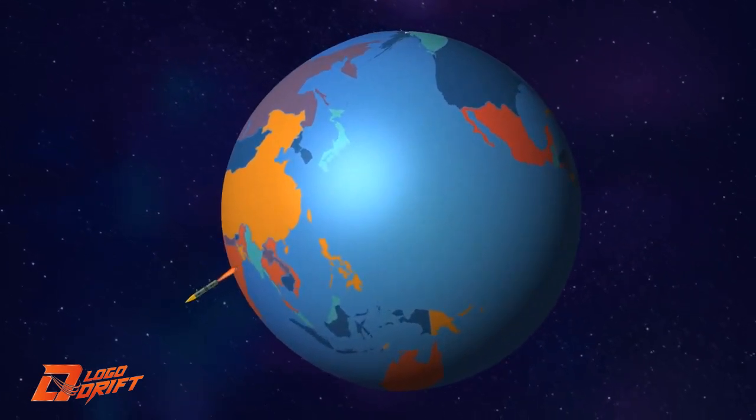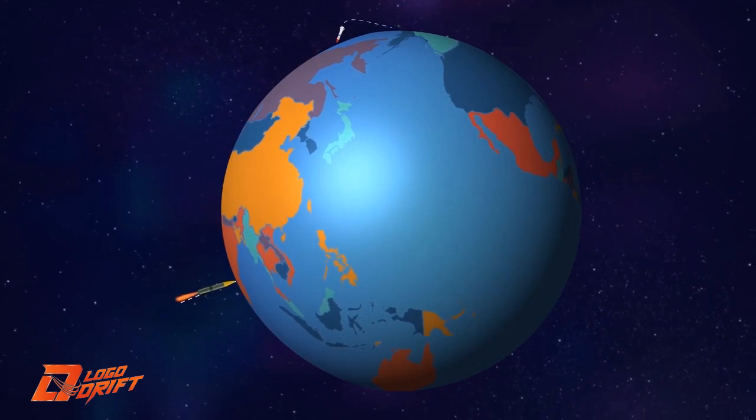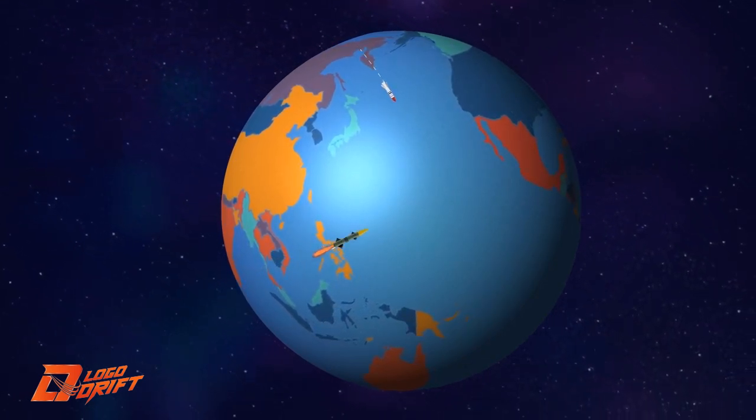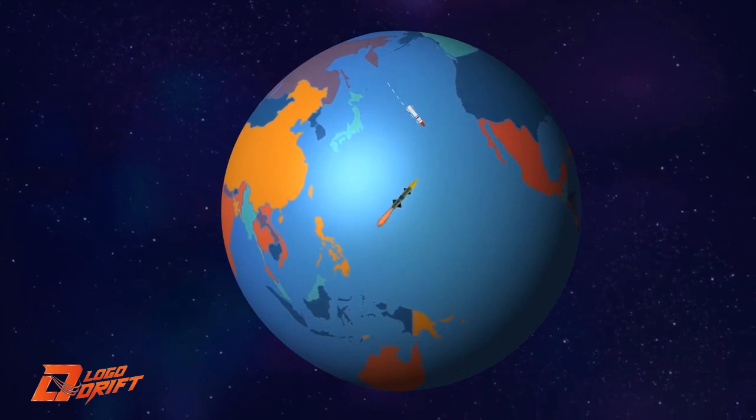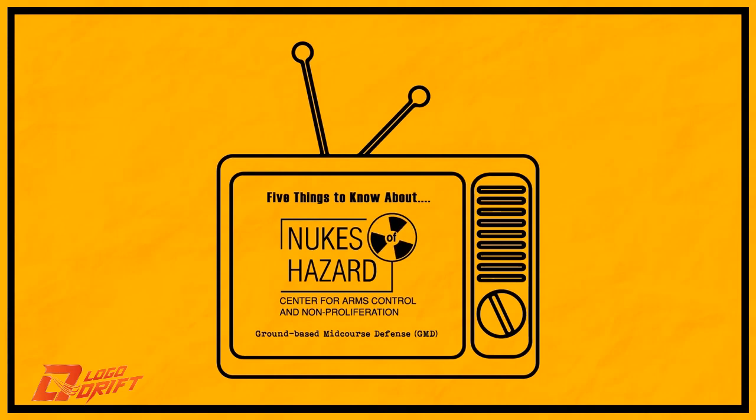To protect the United States from a limited long-range missile threat, the military has deployed a national missile defense system called Ground-Based Mid-Course Defense, or GMD. Here are five key things to know about GMD.